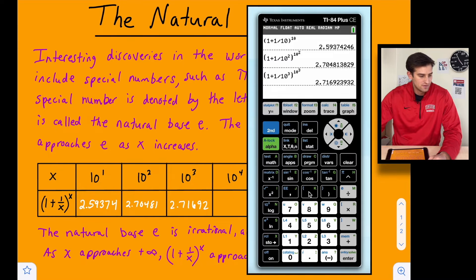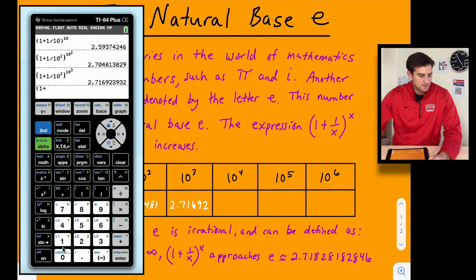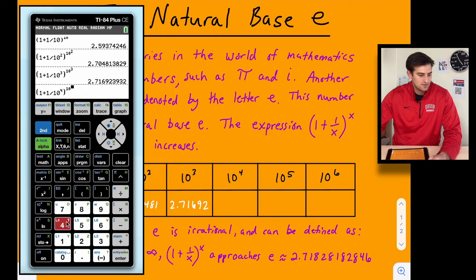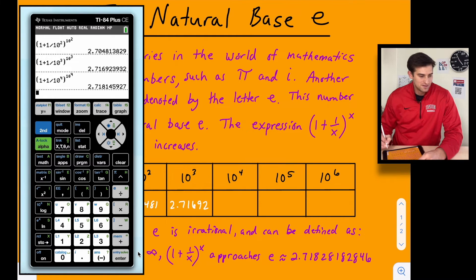Now let's do 10 to the fourth. So 1 plus 1 divided by 10^4. We will close this parenthesis and raise that to the power of 10^4. So here we get 2.71814.